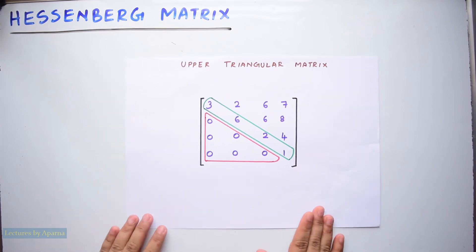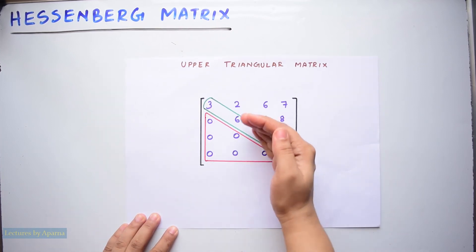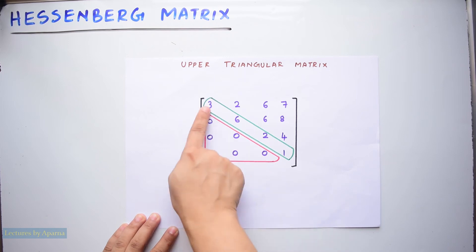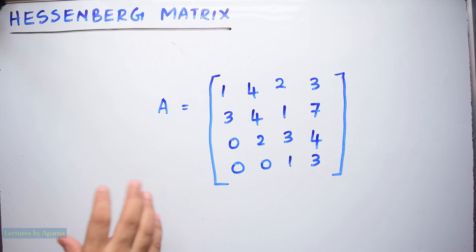An upper triangular matrix will have all elements below the main diagonal zero. So this is the main diagonal, all elements below it will be zero. So this is upper triangular matrix. A Hessenberg matrix is almost like this. Let us see the difference.